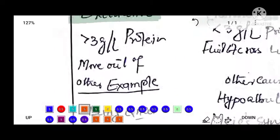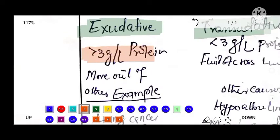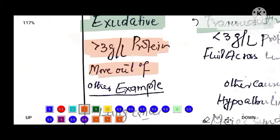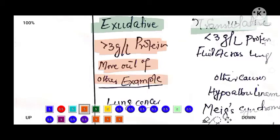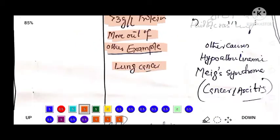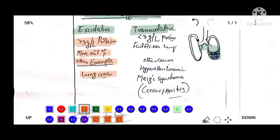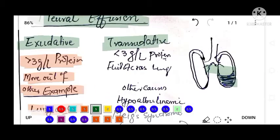Exudative pleural effusion is when there is greater than 3 grams per liter protein, and in this water moves out of the cells. An example of exudative pleural effusion is lung cancer.